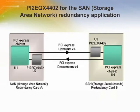Here is an example of using the PI2-EQX4402 for a storage area network redundancy application. The two SAN recovery cards with four-lane PCI Express interfaces are 35 inches apart, and the two PI2-EQX4402 chips U2 and U3 are deployed at the input of PCI Express chipsets U1 and U4. The equalization at the input of the PI2-EQX4402 corrects the messy deterministic jitters, and the output will become clean and pass the PCI Express compliance test.